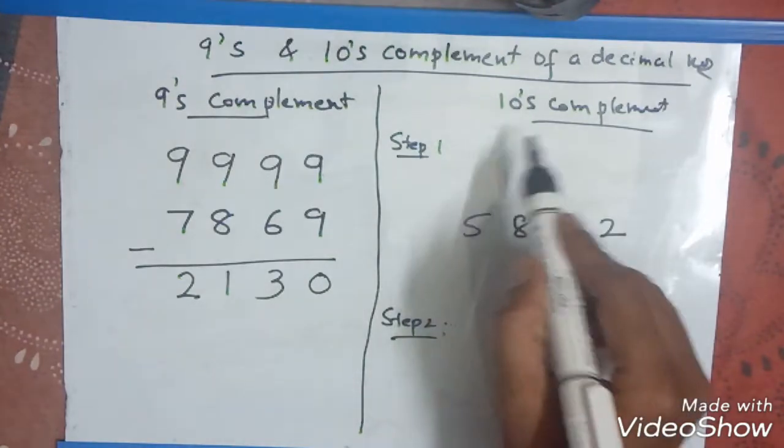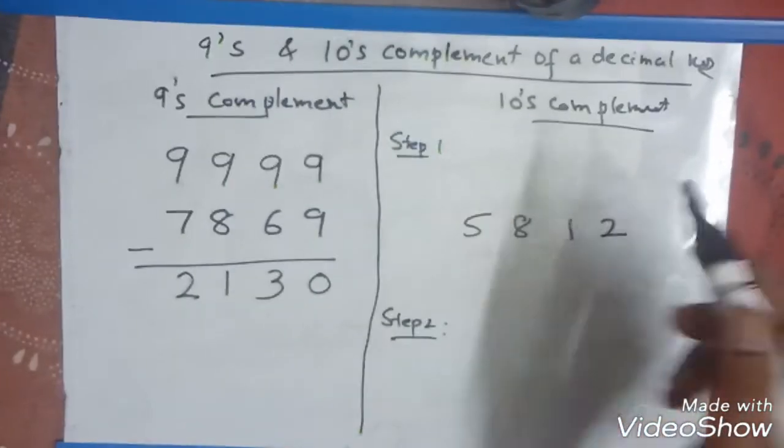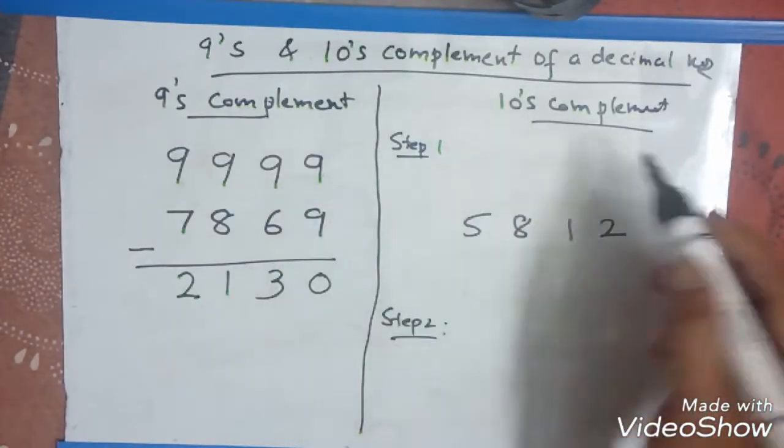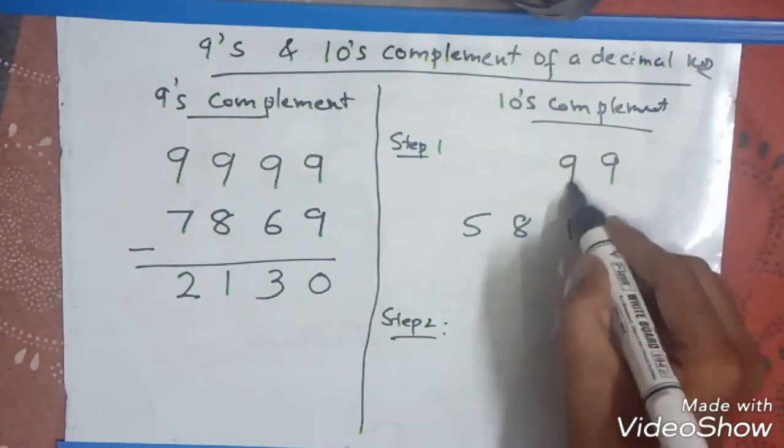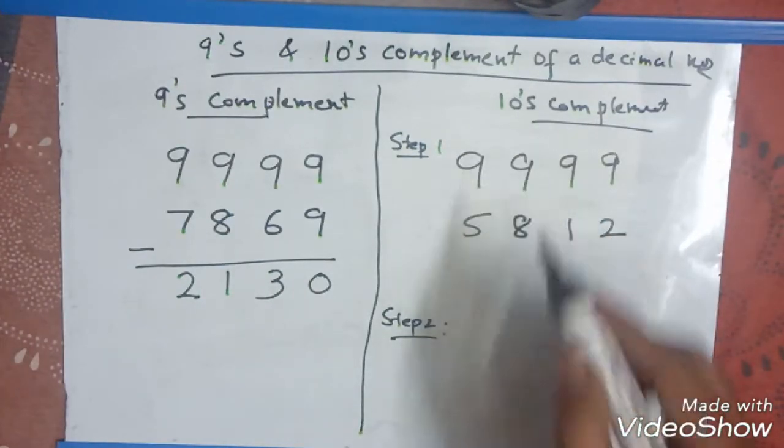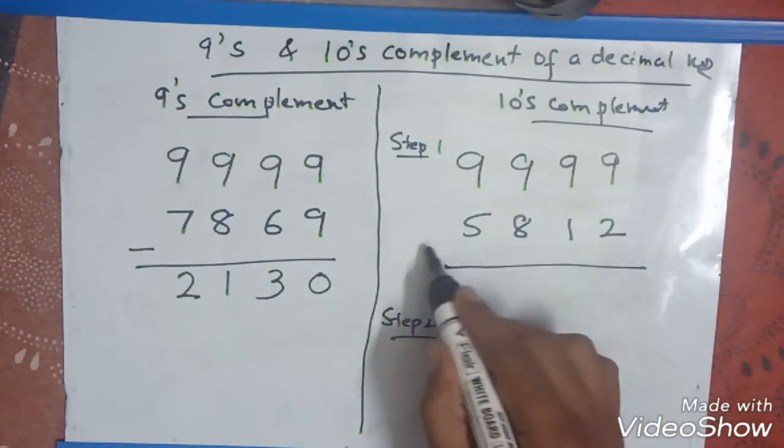Similarly, when finding the value of 10th complement, first you take the same step as the 9th complement: subtract it by 9999 all the individual digits. So you will get the 9th complement first.